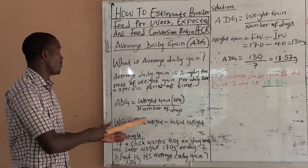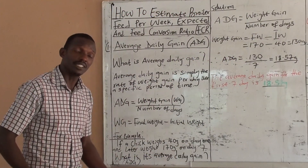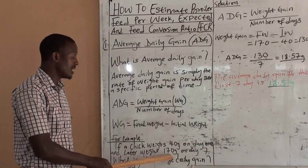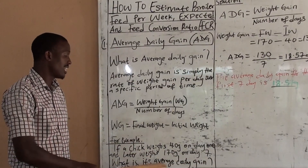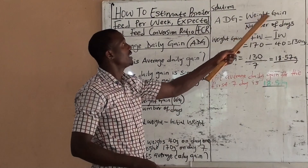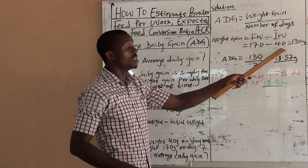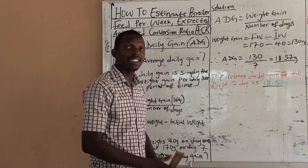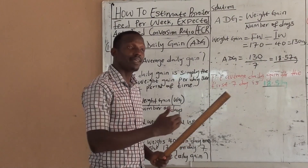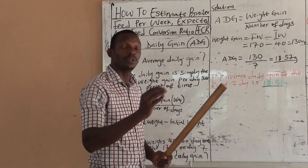To get weight gain, it equals the final weight minus the initial weight. For example, if a chick weighs 40 grams on day 1 and later weighs 170 grams on day 7, what is its average daily gain? Weight gain equals 170 minus 40, which gives 130 grams. The average daily gain is therefore 130 divided by 7, which equals 18.57 grams per day. For the first seven days, the broiler chicken will gain 18.57 grams daily.